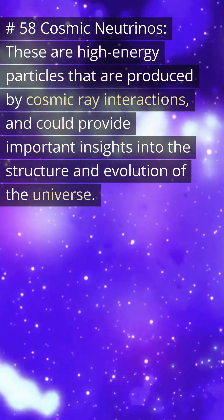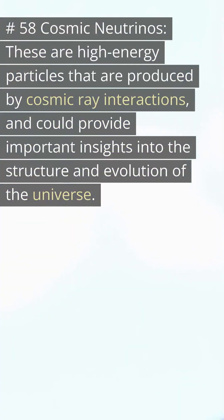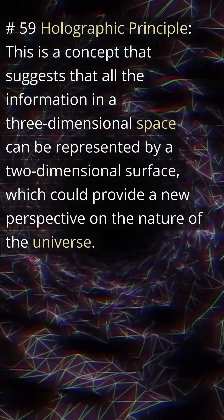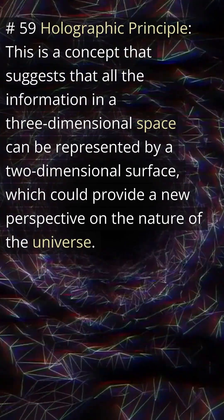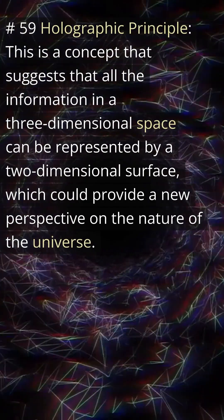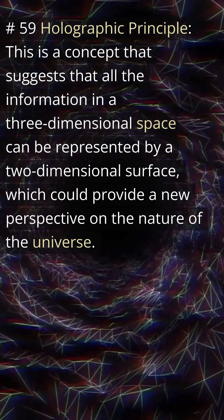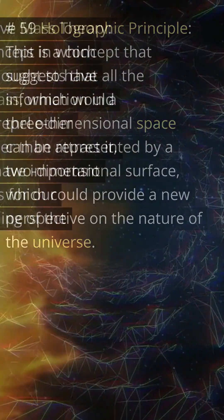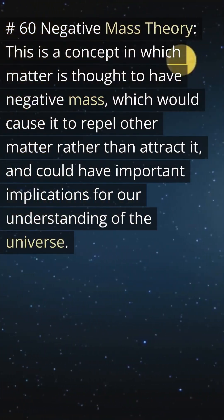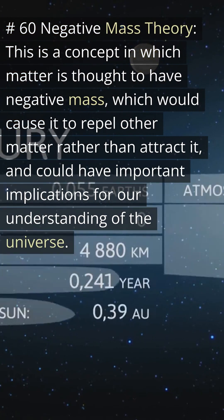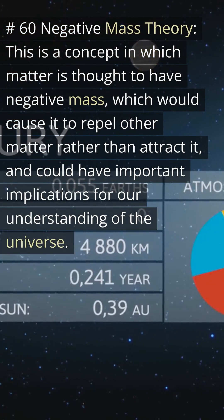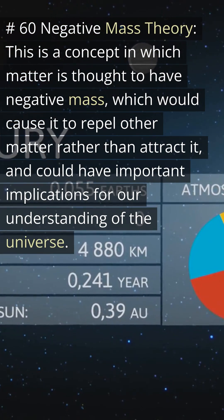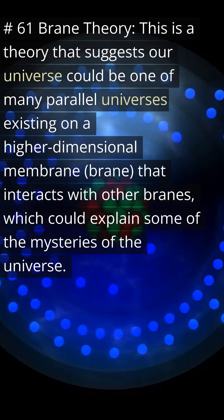Number fifty-eight: cosmic neutrinos — high energy particles produced by cosmic ray interactions, providing important insights into the structure and evolution of the universe. Number fifty-nine: holographic principle — a concept suggesting that all information in a three-dimensional space can be represented by a two-dimensional surface, providing a new perspective on the nature of the universe. Number sixty: negative mass theory — a concept in which matter is thought to have negative mass, causing it to repel other matter rather than attract it, with important implications for our understanding of the universe.